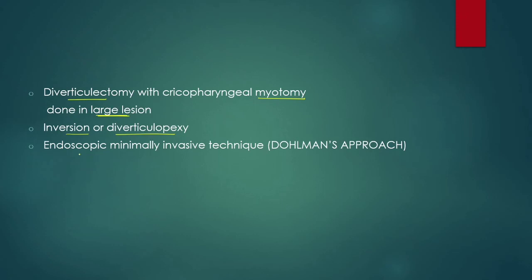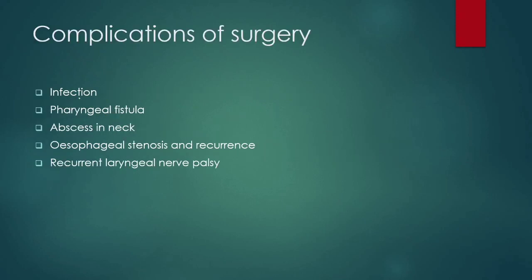There are newer methods like endoscopic minimally invasive techniques — that is Dohlman's approach. In this approach, the pouch is excised using double-lipped endoscopy; cautery or laser can be used. It is a quicker procedure with shorter duration of anesthesia and faster recovery. We can also do stapling of the diverticulum. What are the complications of surgery? There can be infection, pharyngeal fistula, abscess in the neck, esophageal stenosis, recurrence, and recurrent laryngeal nerve palsy. This is in brief about Zenker's diverticulum or pharyngeal pouch. Thank you.